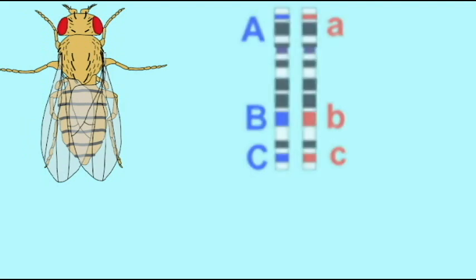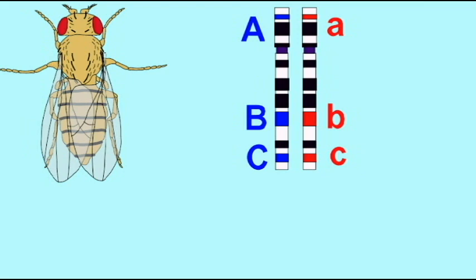If we count and compare the various numbers of the categories of recombinant phenotypes in the F2 generation, we can use this to actually map the chromosome and measure the distances between genes.